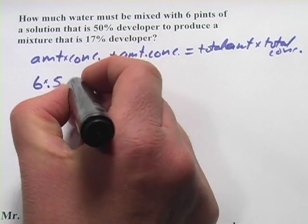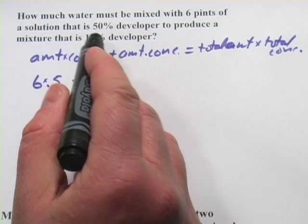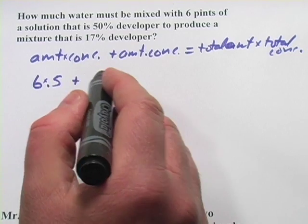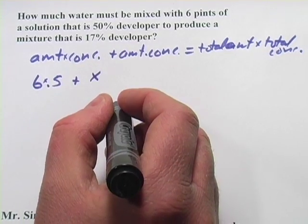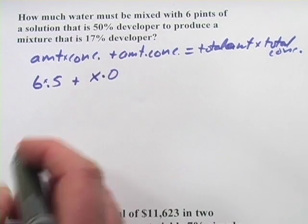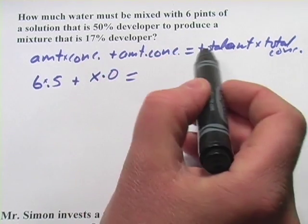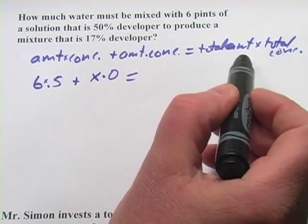Plus, and what we're adding is pure water. The concentration of developer in that water is zero, so you're adding some amount of water that we don't know, and you're going to multiply that by zero. So you can see that term is going to disappear.